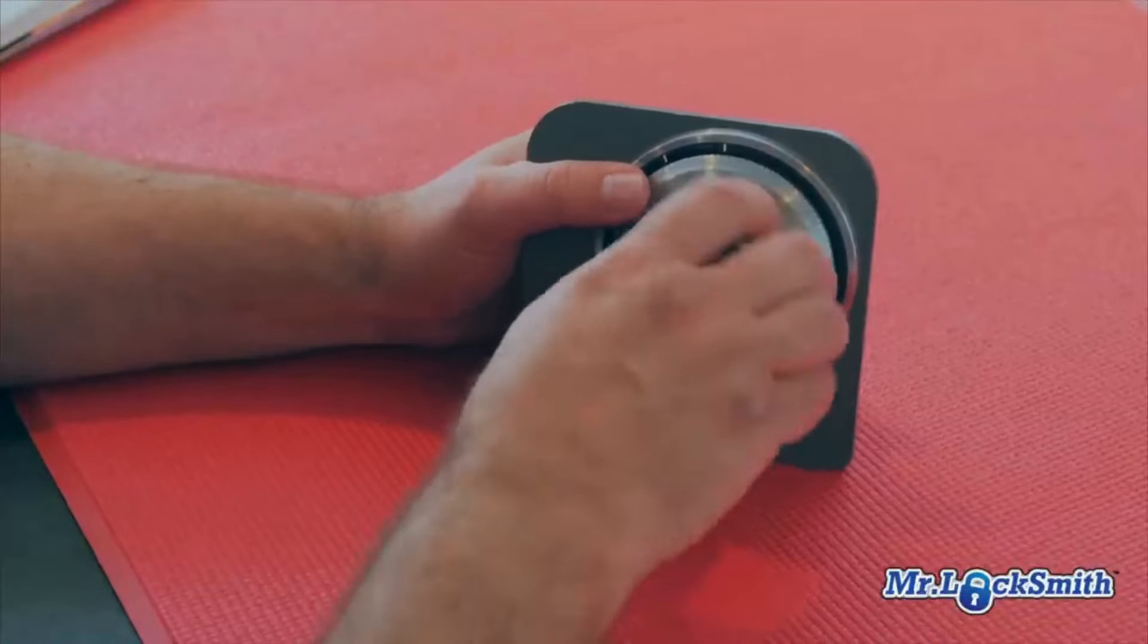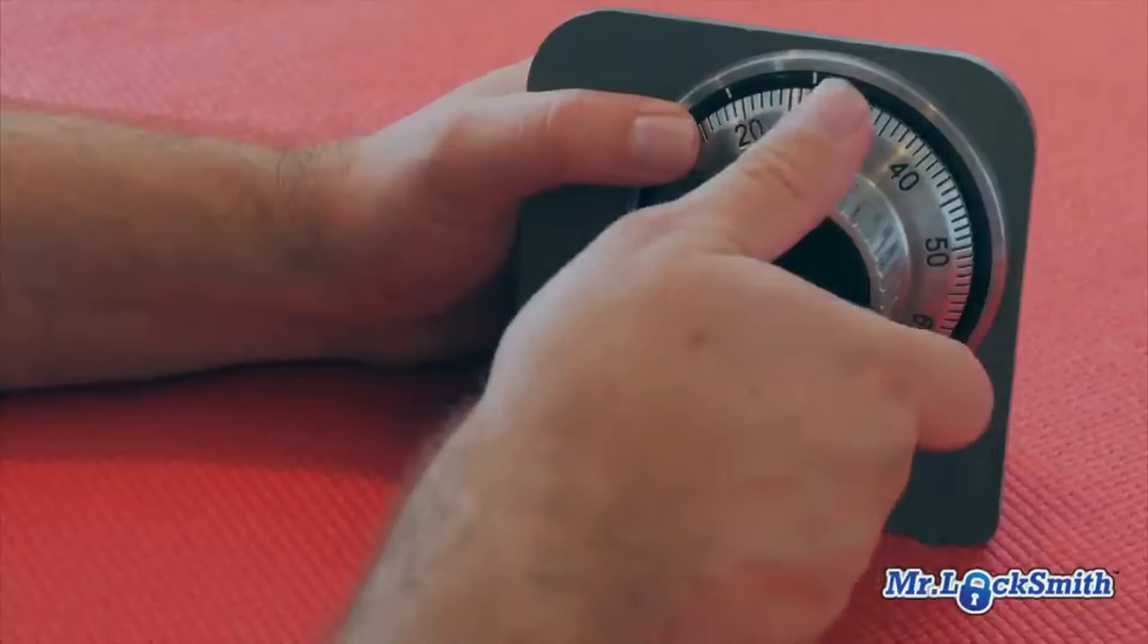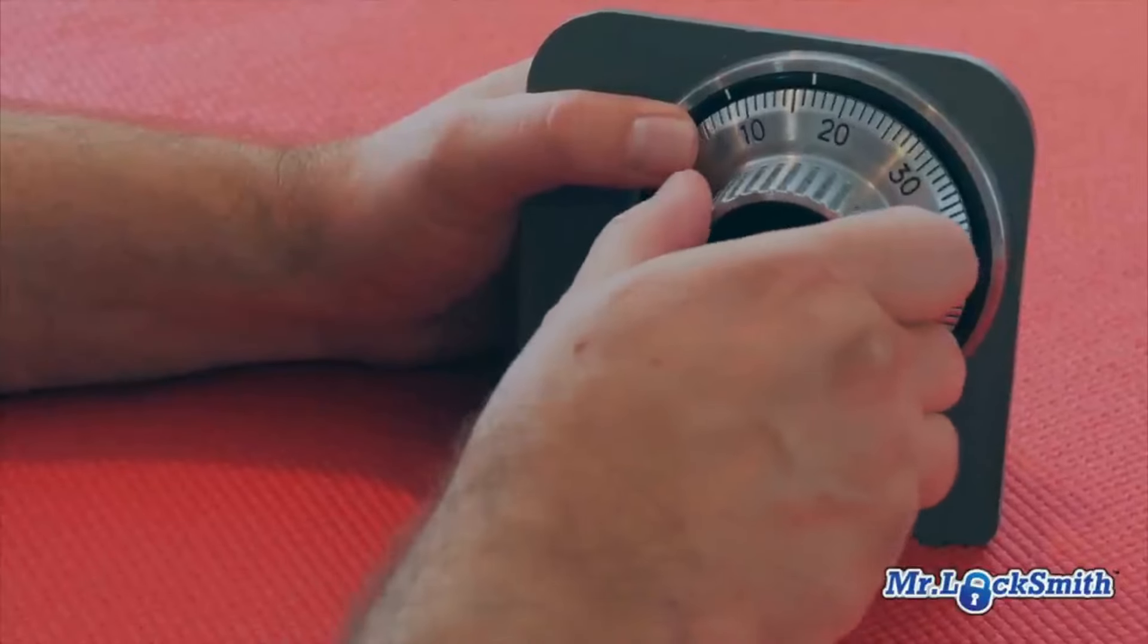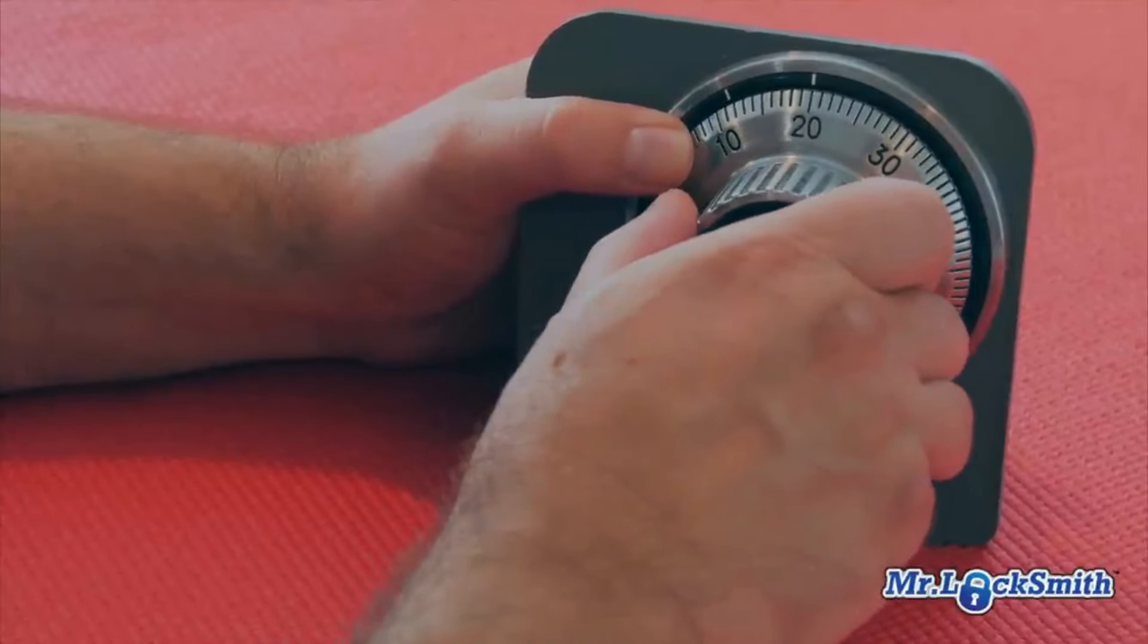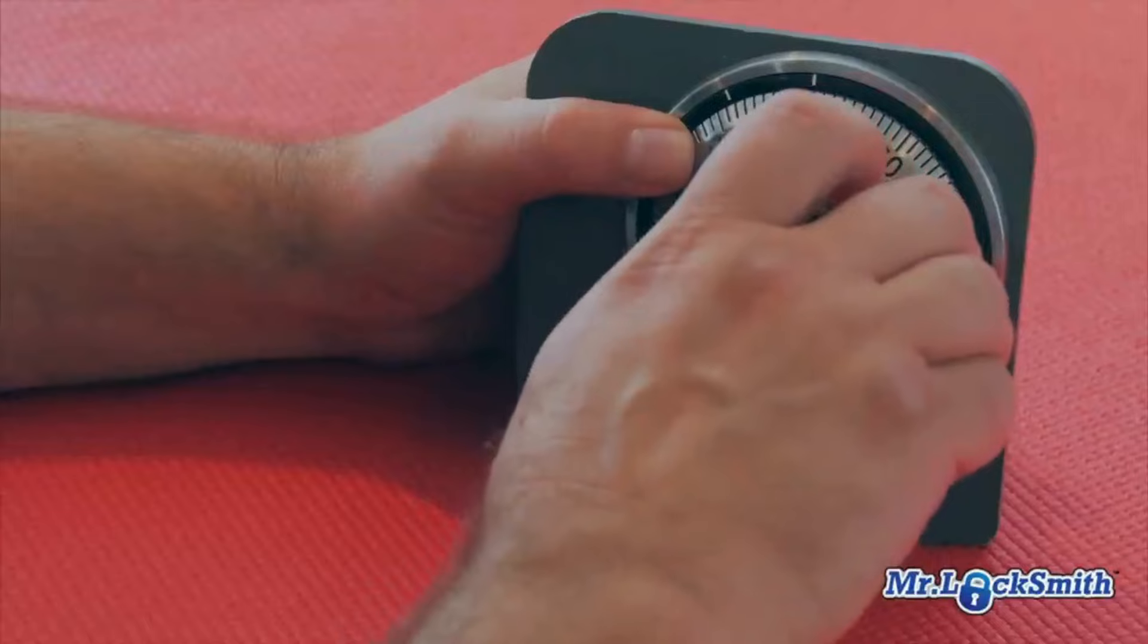We're going to go about half a dozen times, stopping on your first number. Our first number is 20. Then we're going to pass 40 going clockwise, stopping on the third time. So we go once, twice, stopping on the third time.